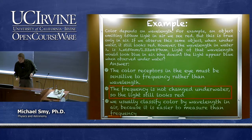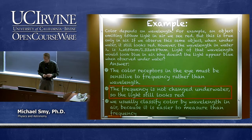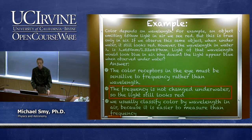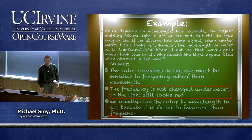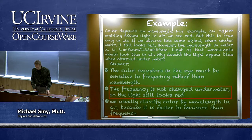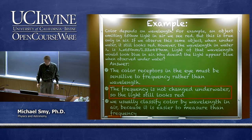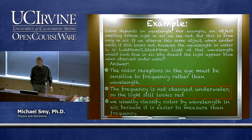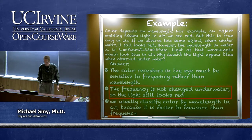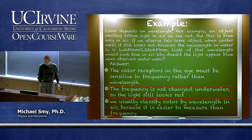Let's look at an example. Suppose we have an object that emits 650 nanometer light in air, and we see that as red. But this is only true in air. If you observe the same object when underwater, it still looks red, even though the wavelength in water — lambda_n — is 650 nanometers over 1.33, which is about 489 nanometers. Light of that wavelength would look blue in air. So why doesn't the light appear blue when observed underwater?